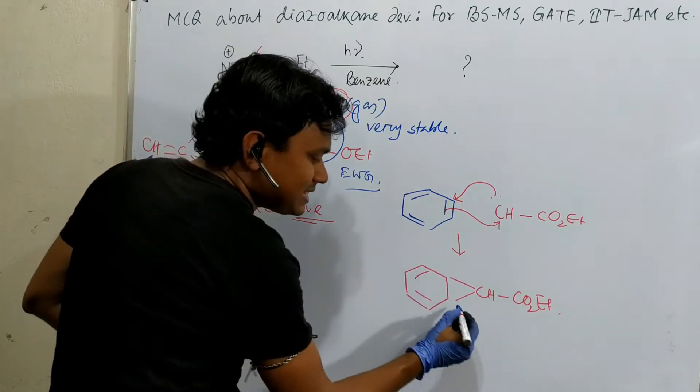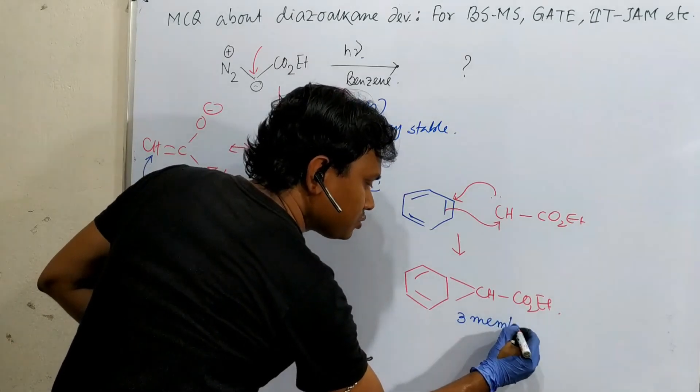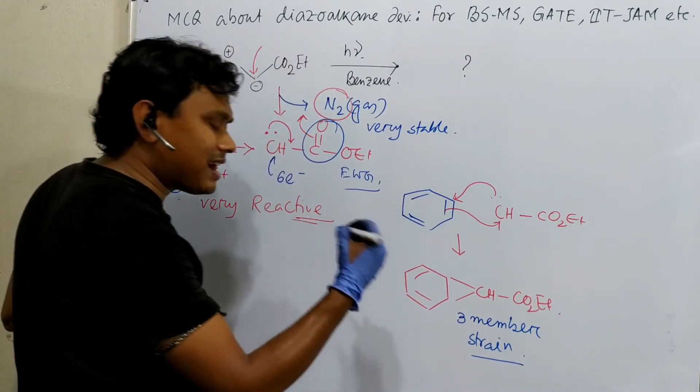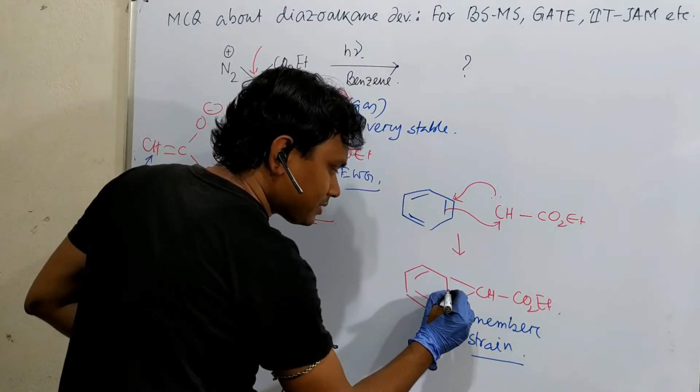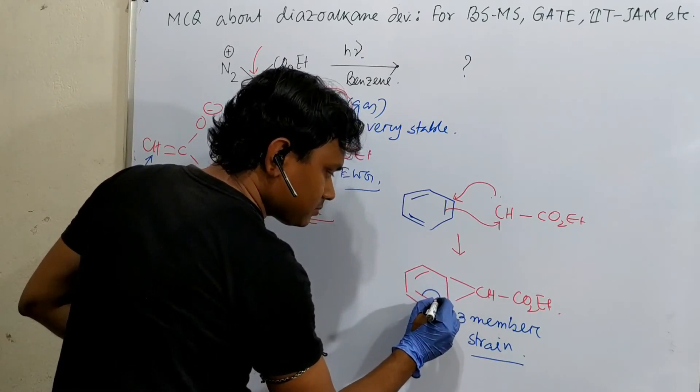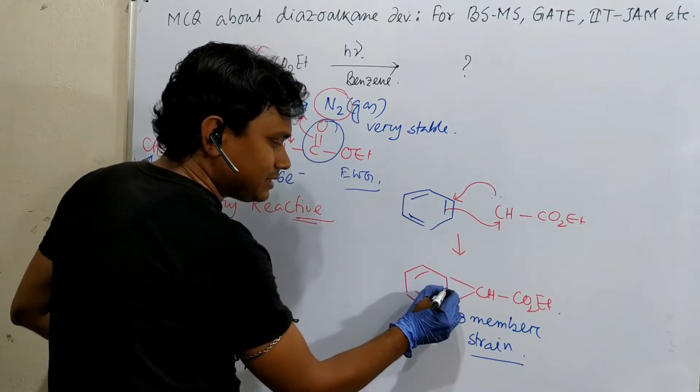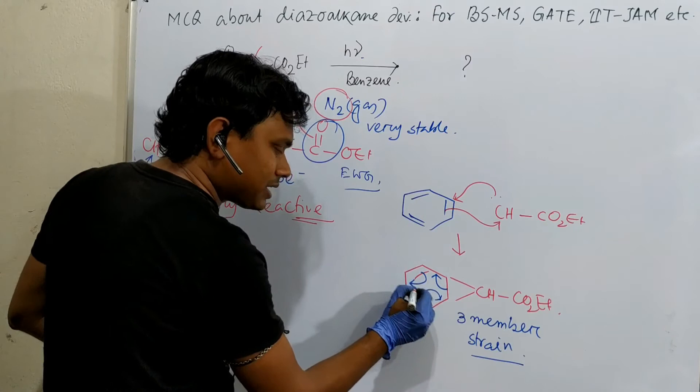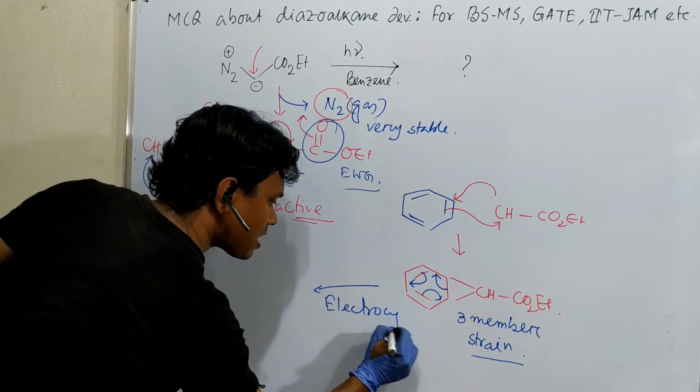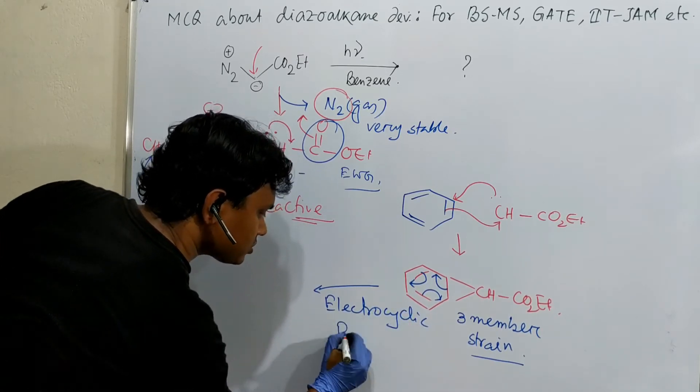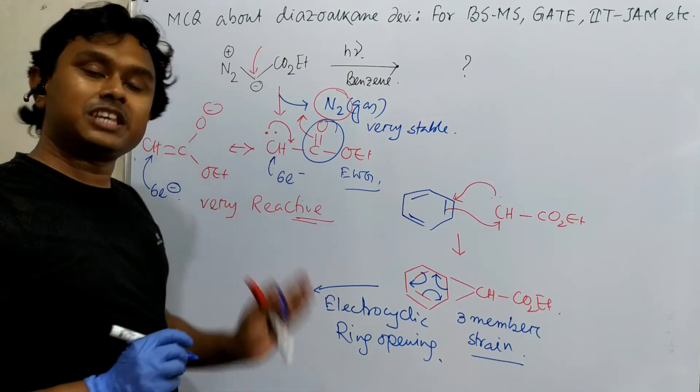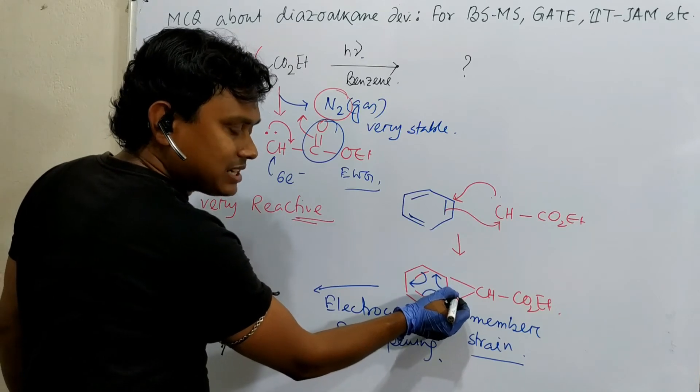Now how does that happen? Since it is a three membered ring, strain is there. Considerable strain. Consequently what happens? This undergoes electrocyclic ring opening. How? It can come here. This bond can go there. Consequently this bond can also. This is actually electrocyclic ring opening. So what does it result?